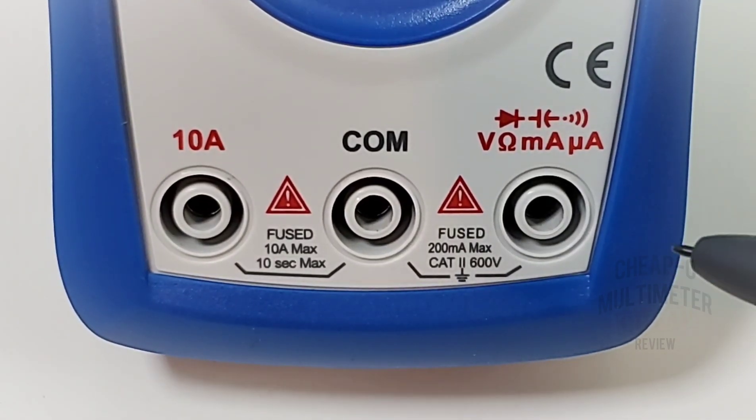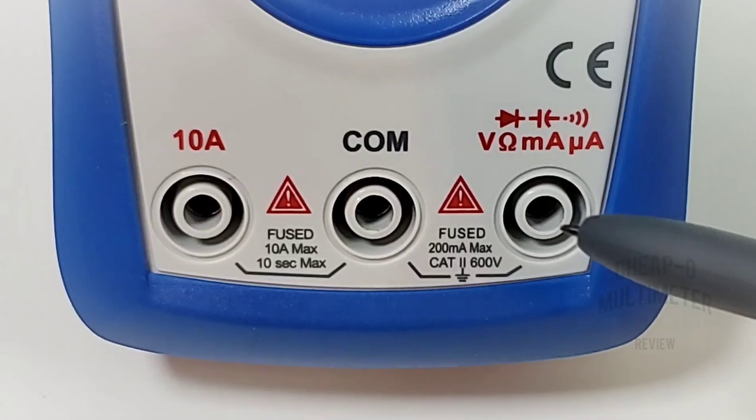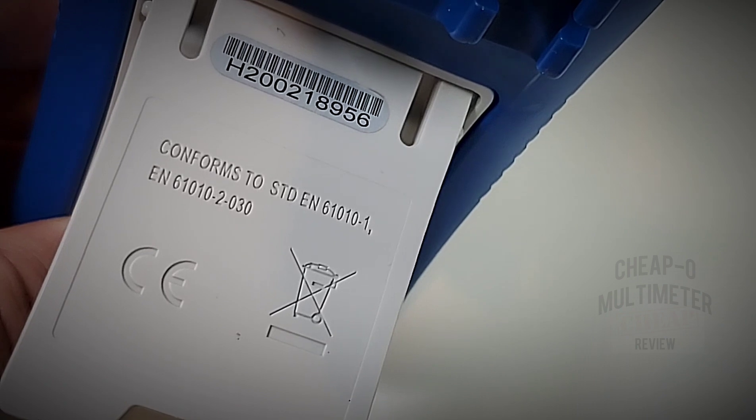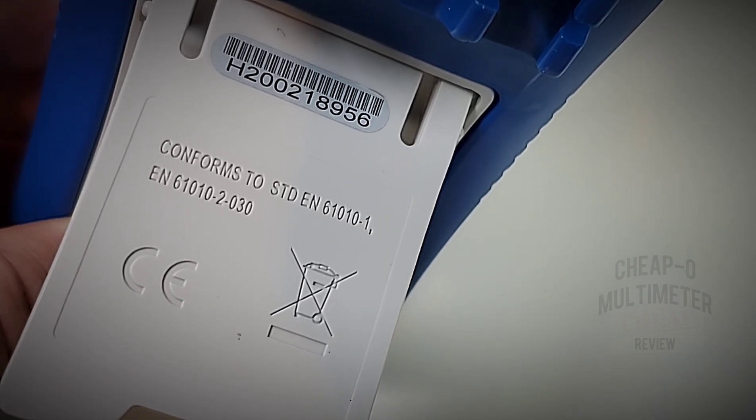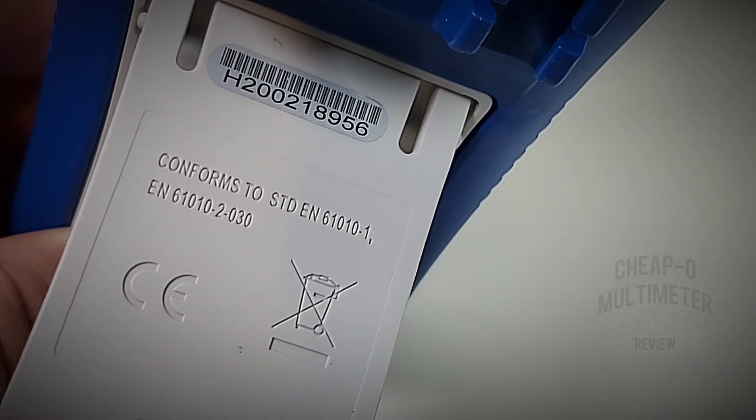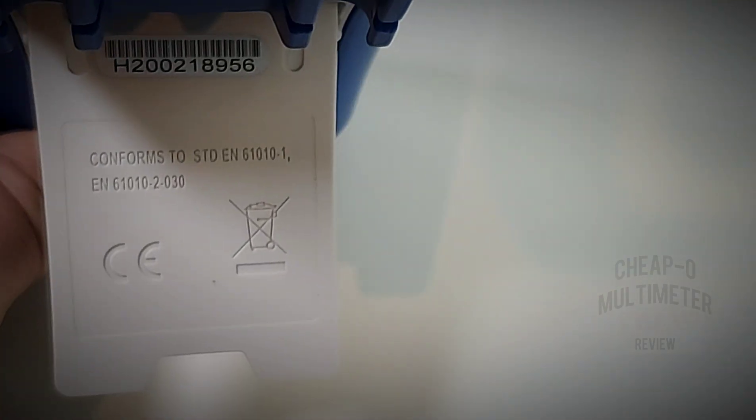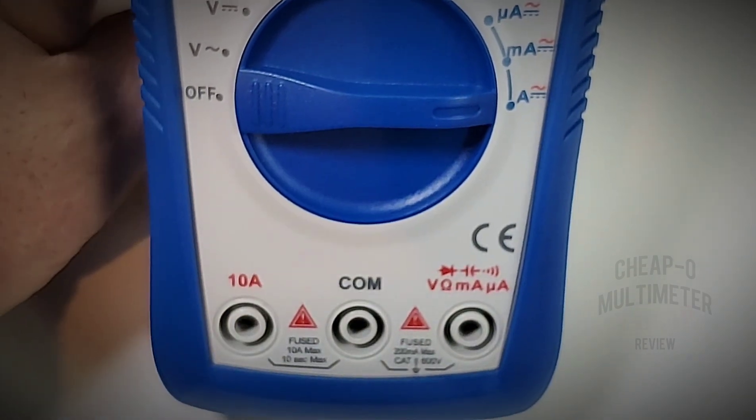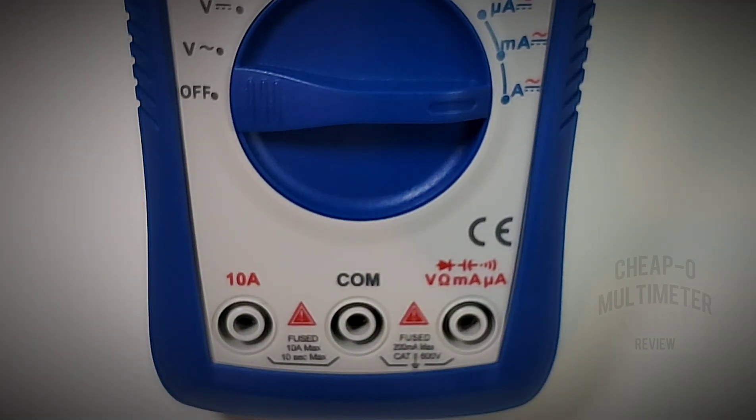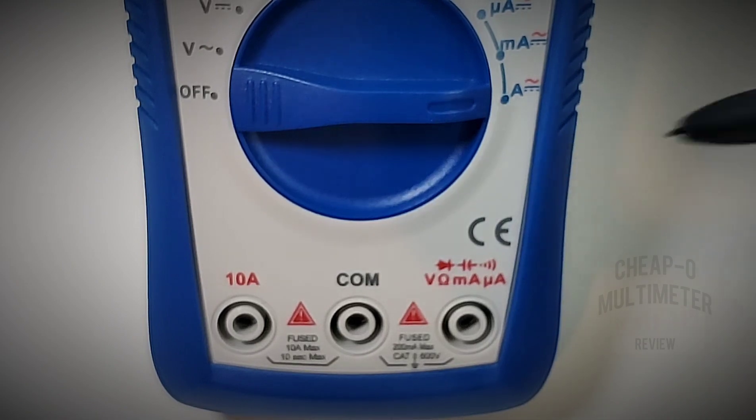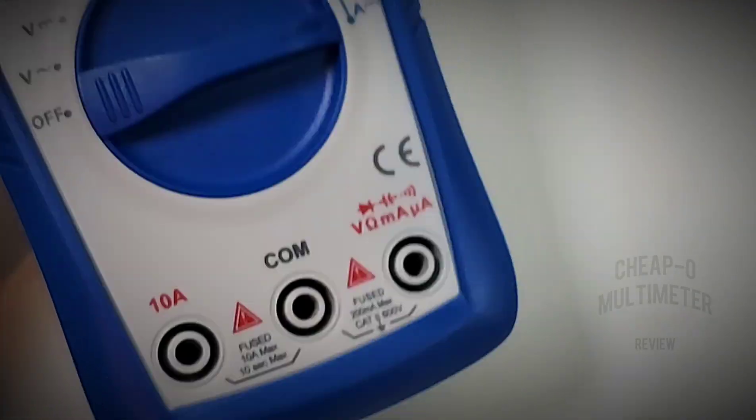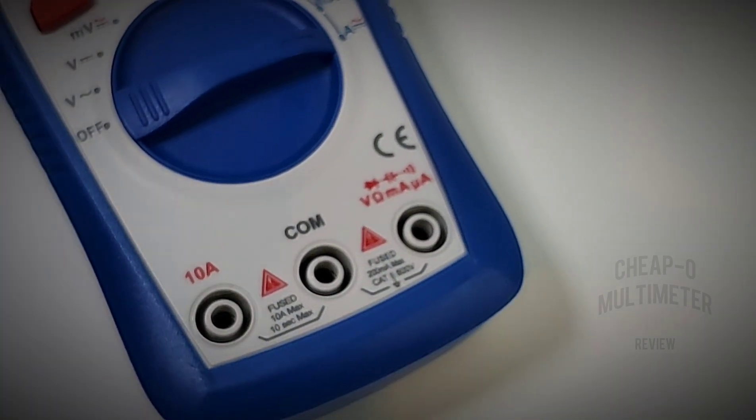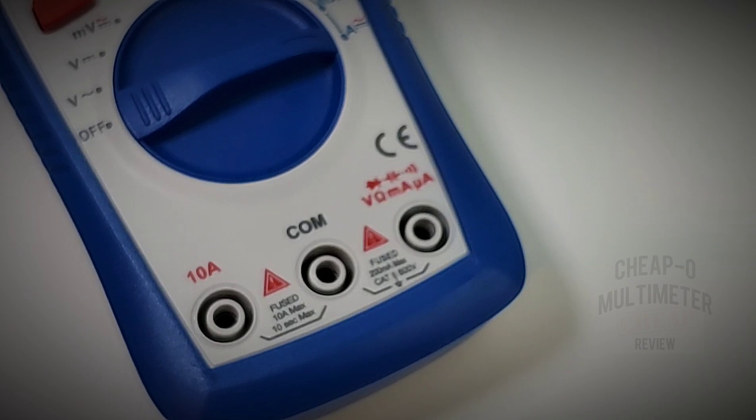On the back of the meter it says it conforms to the EN61010-2-030 standard, but unfortunately, saying it conforms and actually being tested to conform are two different things. We just have the standard CE authentication label, so really it hasn't been tested. Take that with a huge grain of salt - just because something says it can conform to a standard, if it hasn't been tested that's pretty well meaningless.